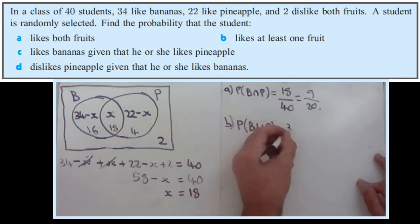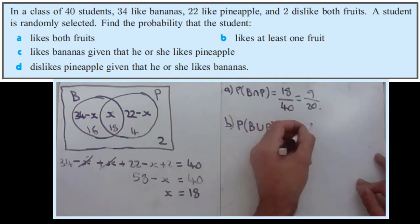There's 38 students in the union, and there's 40 students in total. So 38 over 40 can simplify to 19 over 20.